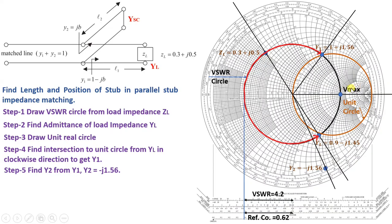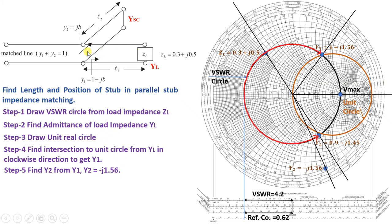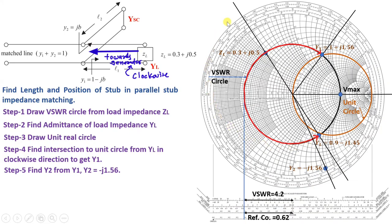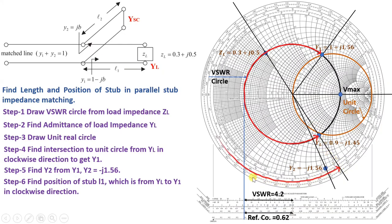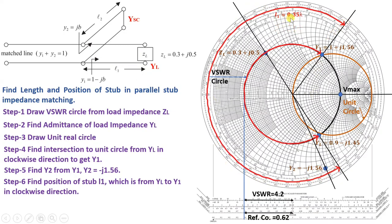Now we have Vmax (which is YSC), Y1, Y2, YL, and YSC all identified. We can now find L1 and L2. L1 is the length from YL to Y1 in the clockwise (towards the generator) direction. Moving from YL to Y1 clockwise on the Smith chart and reading the wavelength scale, the calculated value of L1 is 0.35 lambda.